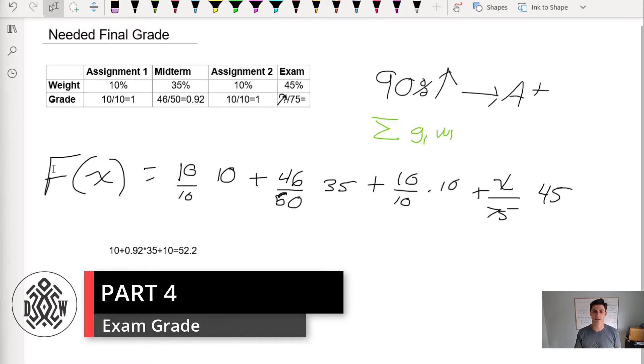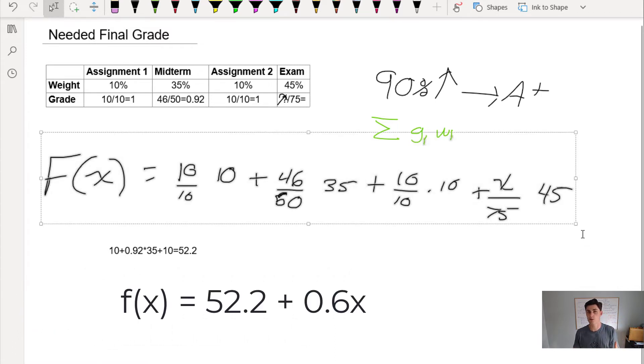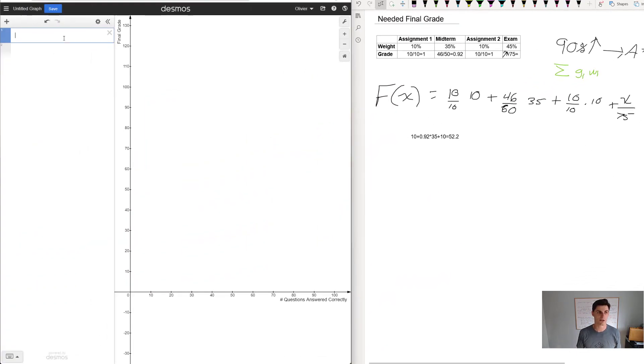Now that we have a formula we can realize this is really just a function of x with a constant and a slope, so it's a line. Here we have Desmos, it's a free online calculator. We know the constant is 52.2, the y-intercept. My slope is x over 75, my number of questions answered correctly, times the weight of the exam which is 45.